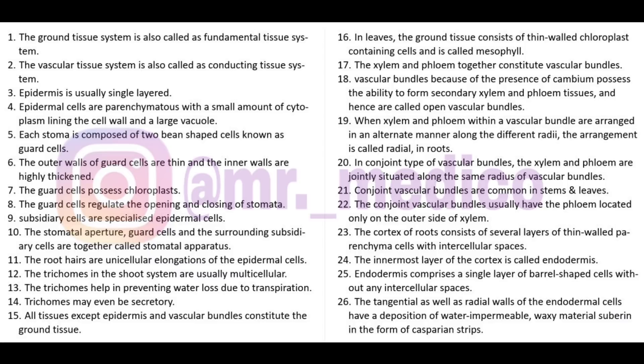The cortex of the root consists of several layers of thin-walled parenchyma cells with intercellular spaces. The innermost layer of the cortex is called endodermis. Endodermis comprises a single layer of barrel-shaped cells without intercellular spaces. The tangential as well as radial walls of endodermal cells have a water-impermeable waxy material.